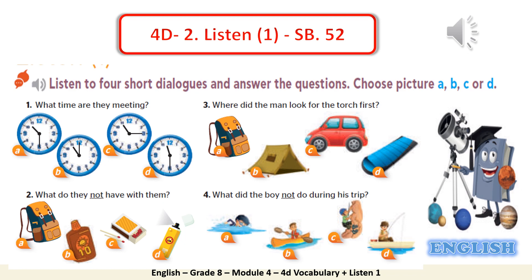Dialogue 3: Do you know where the torch is, George? I can't find it in the car. — Well, then it's probably in my backpack. — I checked there before I went to the car. — Oh, now I remember. I needed it last night, so it's probably next to my sleeping bag in the tent. Dialogue 4: Rock climbing looked like fun, but it was so hot that we decided to spend our last day at the lake. — Did you go canoeing? Did you go fishing? — Well, we did both of those on our first day, so we decided to go swimming instead.